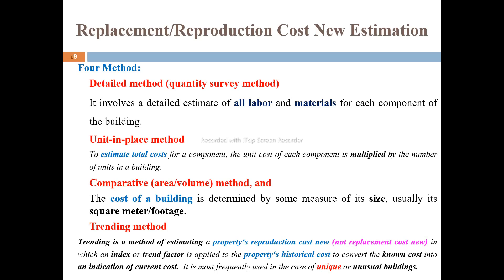The unit-in-place method estimates the total cost of each component. For example, the foundation of the structure, the columns of the structure, and other structural components are each estimated separately based on specific materials. The cost of the building is determined by some measurement of size, usually square feet.